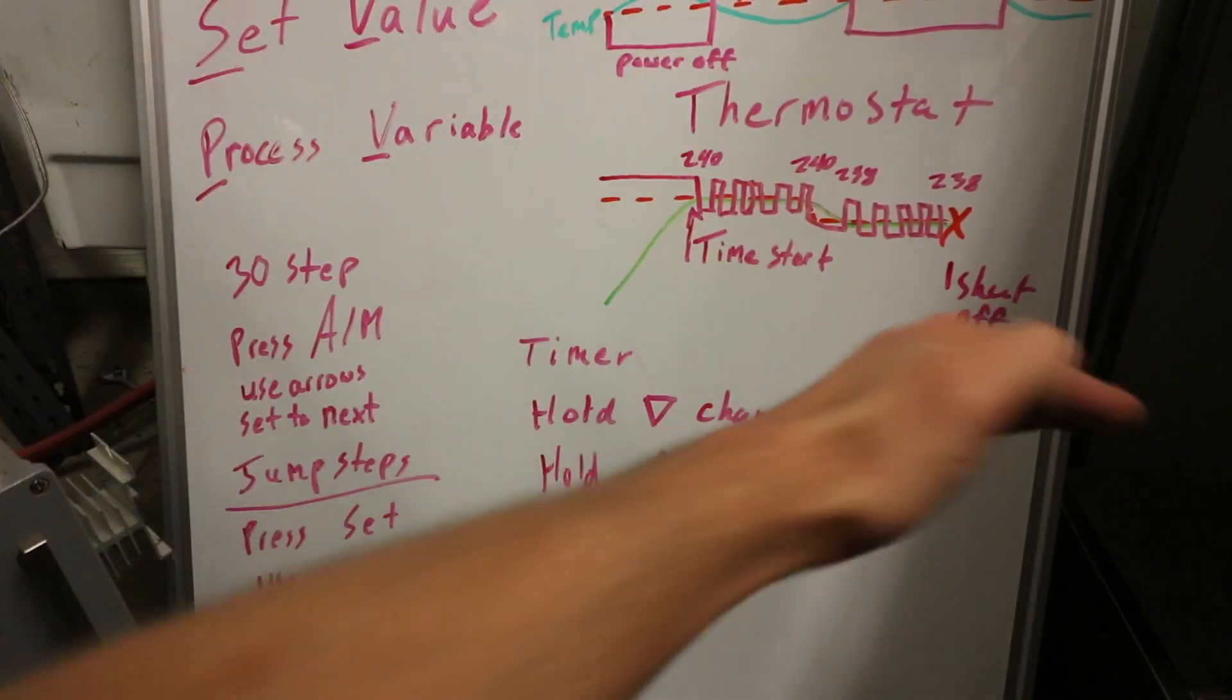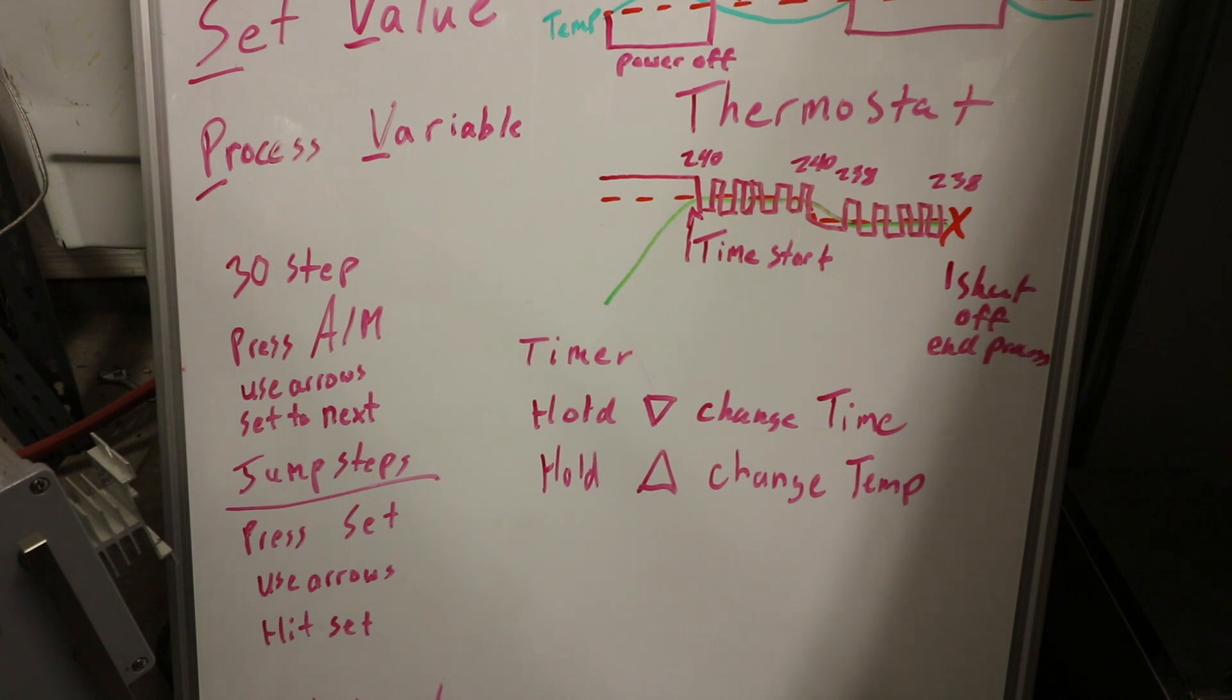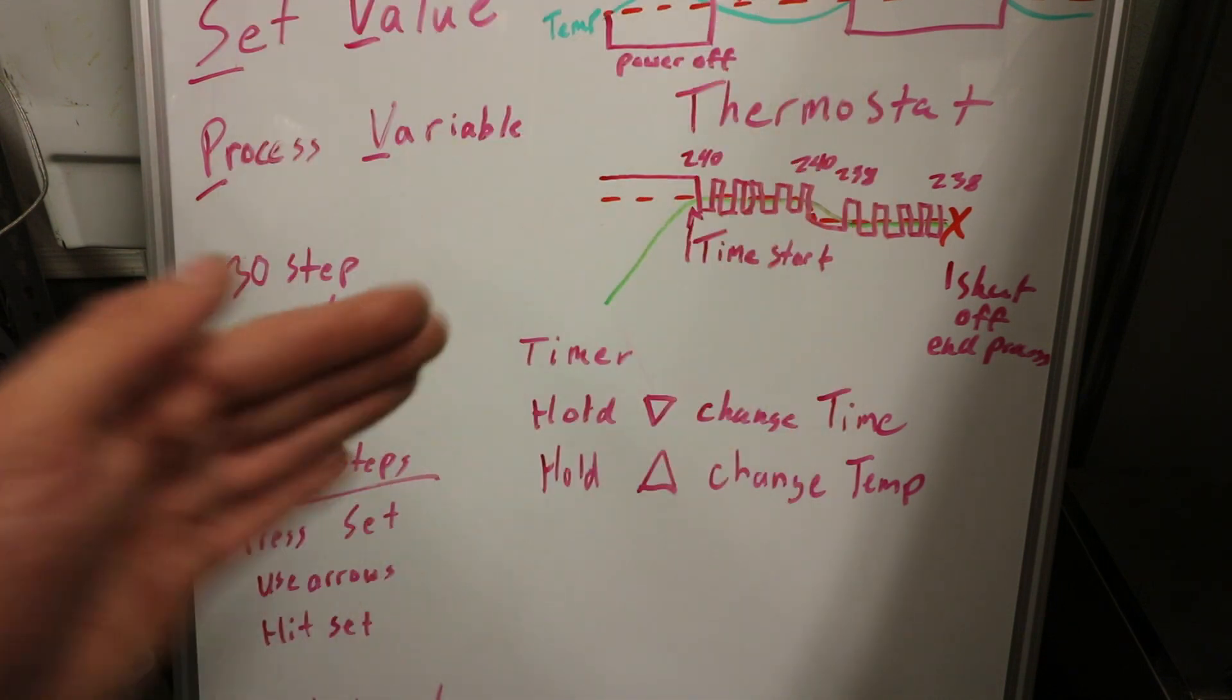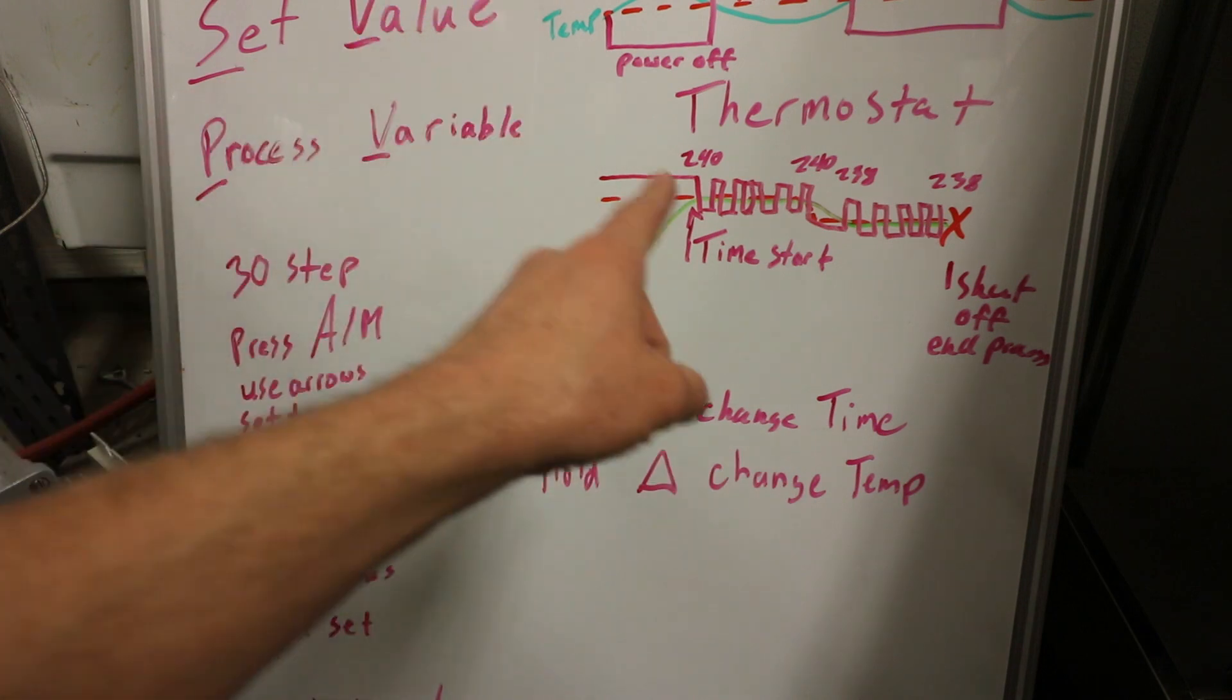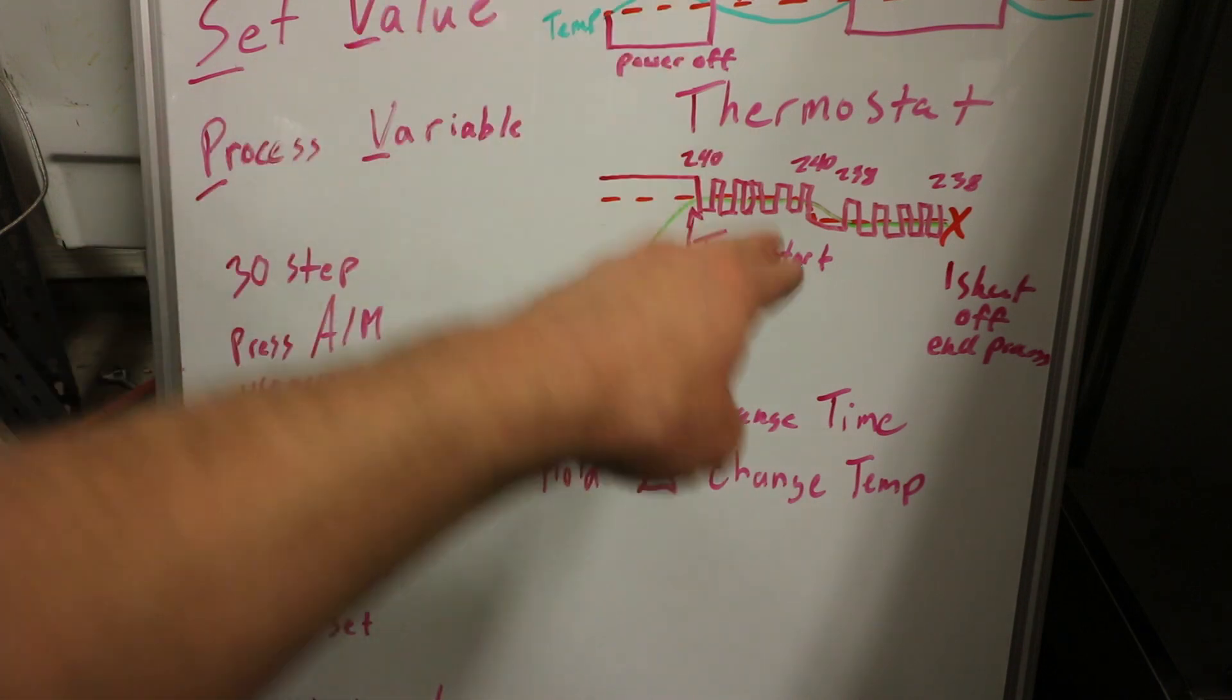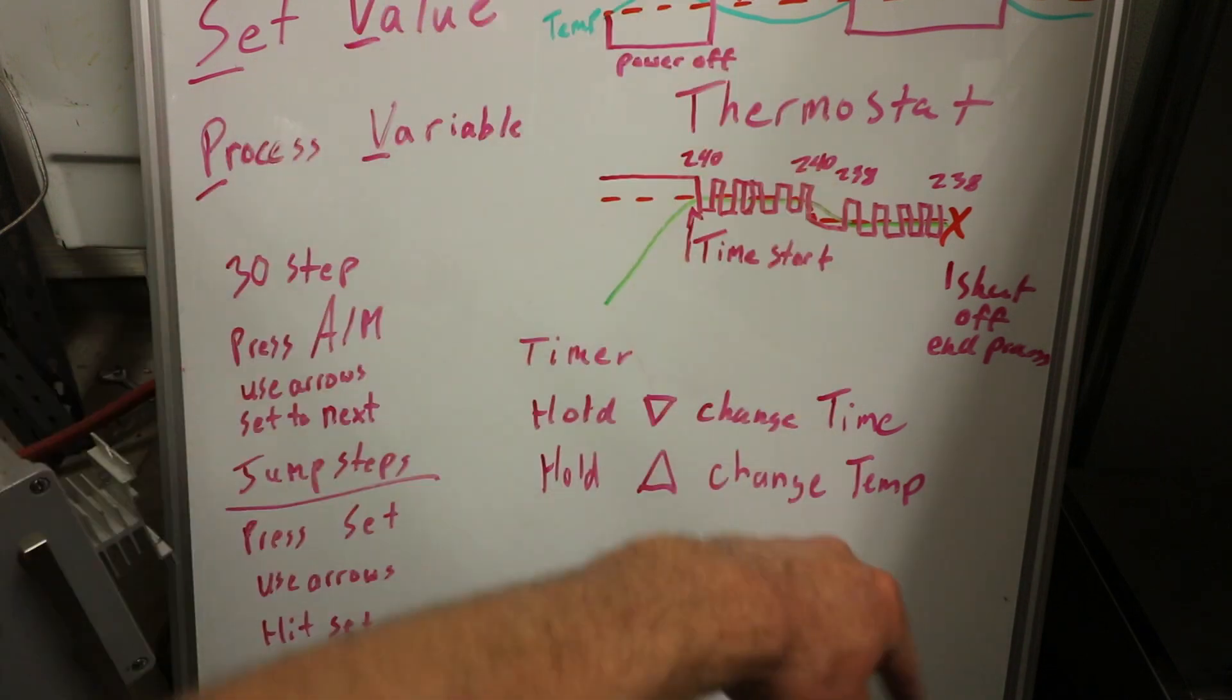Otherwise, it's going to be ramping down. It's a ramp soak controller. So if you want it to soak and not ramp, you have to have one set at 240, and then the next step set at 240, and then you can step it down.